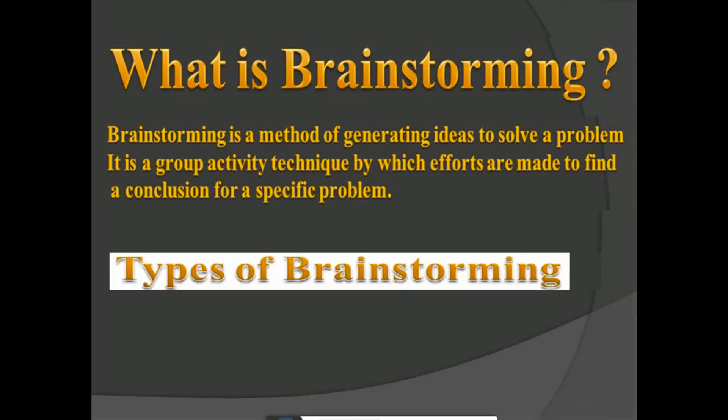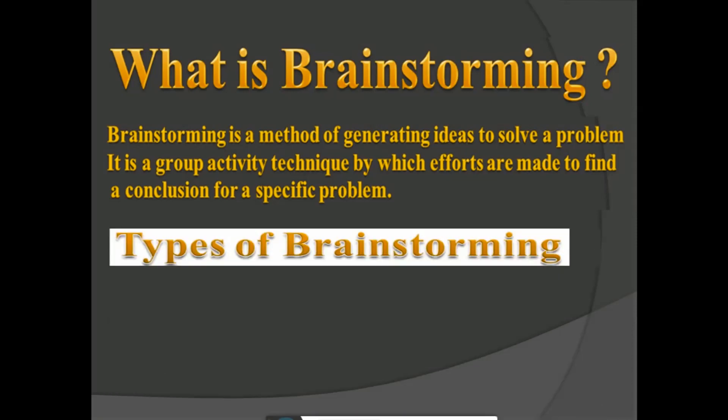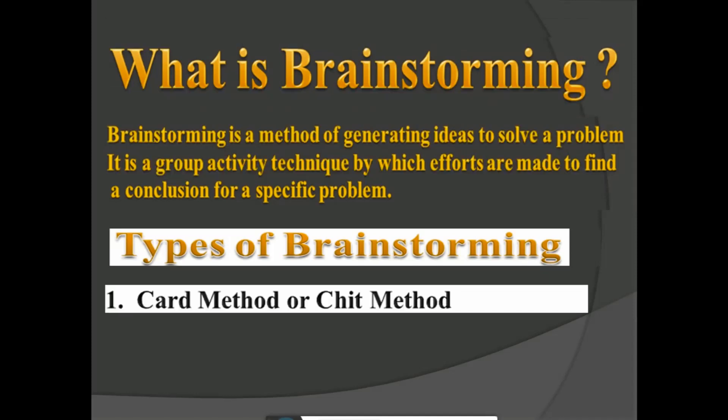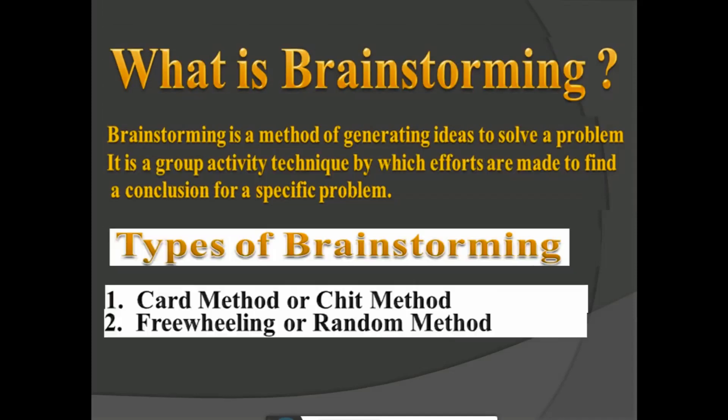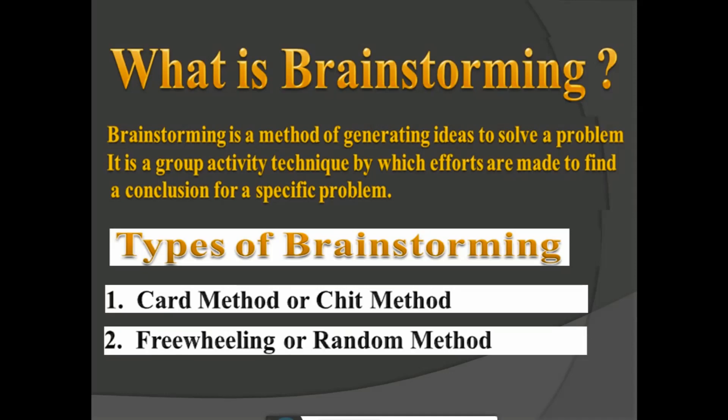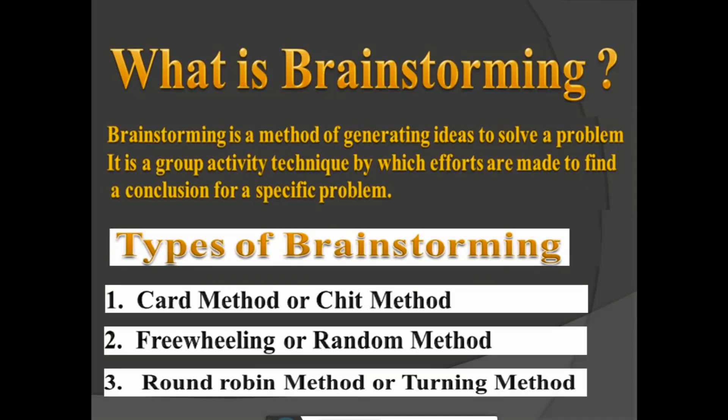Now let's discuss the types of brainstorming. Brainstorming has three types: the first is the card method or cheat method, the second is the freewheeling or random method, and the third is the round robin method or turning method. These are the three kinds of brainstorming.